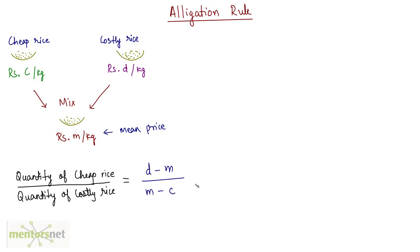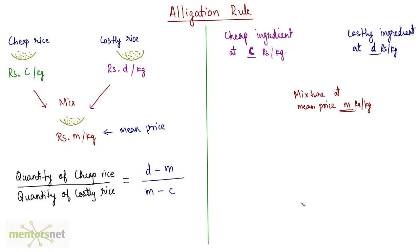So how do you remember this formula? Well, we have a nice pictorial representation for it. You have a cheap ingredient at C rupees per kg and a costly ingredient at D rupees per kg. You mix these two ingredients to get a mixture which you want to sell at M rupees per kg — that's the mean price. On the right hand side we have the difference between the mean price and the cheap price, so M minus C.